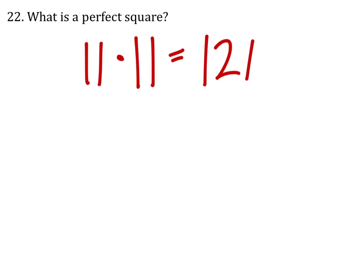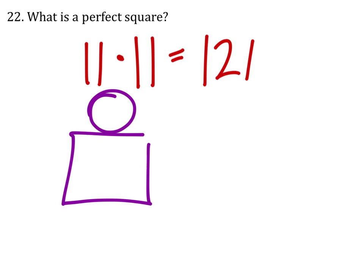Alright. So if you have a square, it's when the side length is a whole value, such as 70.